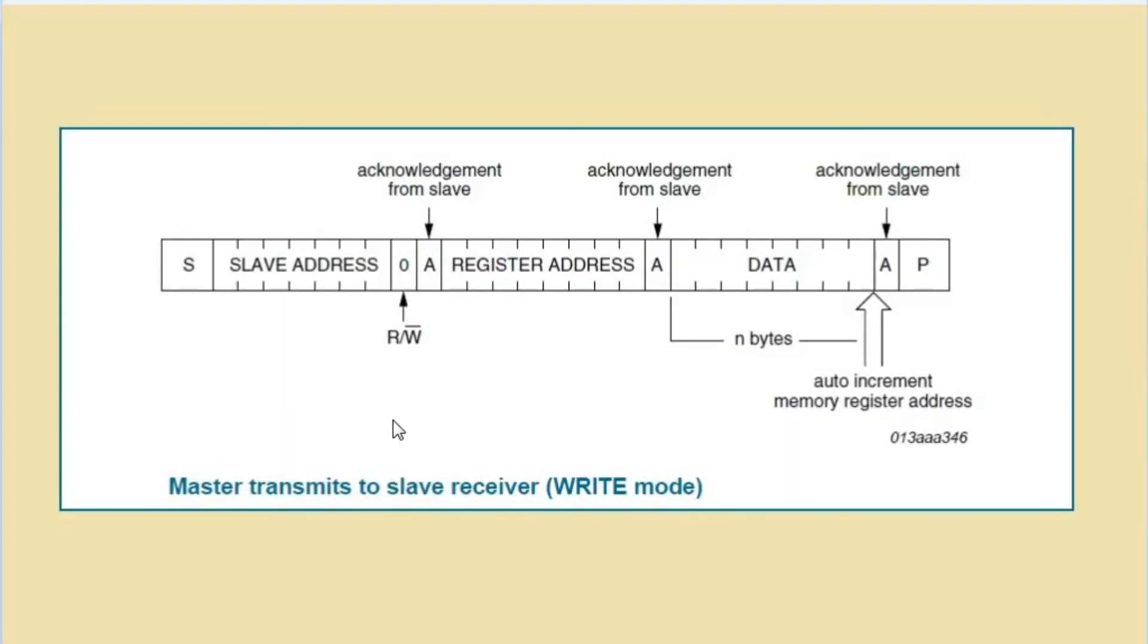In write mode, master will transmit and slave will receive. Master will initiate communication by sending start bit on I2C bus followed by slave address including read write bit. Here it is 0 because we are writing data to the slave. Upon reception of slave address, slave will acknowledge master. Then master will send register address that is memory location where we want to write data.